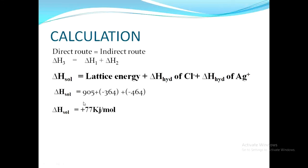By putting in the values — the hydration enthalpy of the chloride ion is −364 kJ/mol and the hydration enthalpy of the silver positive ion is −464 kJ/mol, along with the lattice energy of +905 kJ/mol — we are able to calculate the enthalpy of solution, which gives a value of +77 kJ/mol.